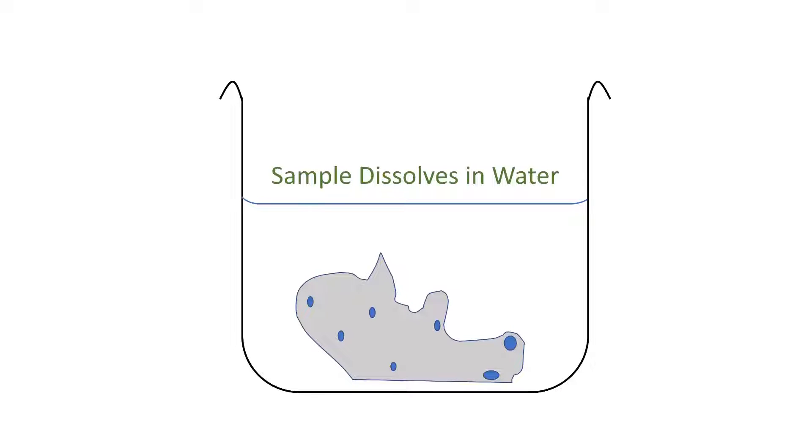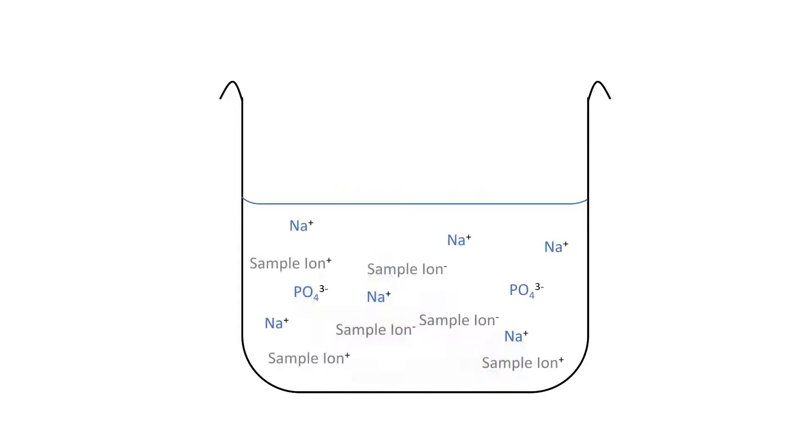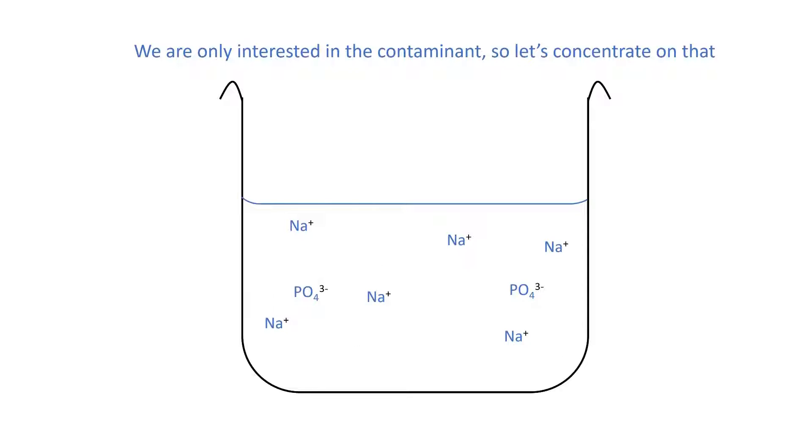To help better understand our reasoning on the previous slide, we can visualize what happened. So, we have our sample that contains some amount of sodium phosphate contaminant, which we've indicated here as little blue dots. This sample was dissolved in water, which we'll show here in this beaker. As we are only interested in the contaminant, let's ignore the ions of the sample itself.